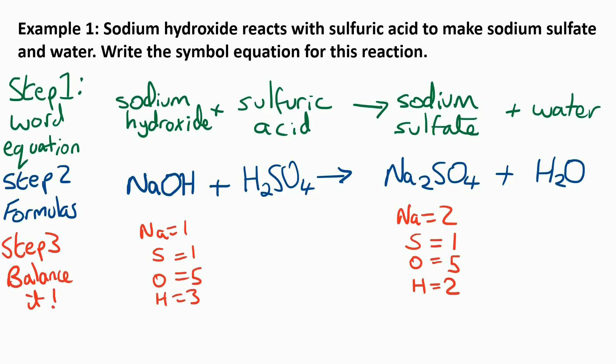Let's see what we've got to start with. We've got one Na on the left, two on the right. One S on each side. Five O's on each side — one O on the left in NaOH and four in the H₂SO₄. And we've got three H's on the left altogether and two H's on the right. So let's start by balancing the Na — we need two on the left. We can't mess with the small numbers; we can only put big numbers in front. So we put a big two in front of NaOH to give us two Na's.